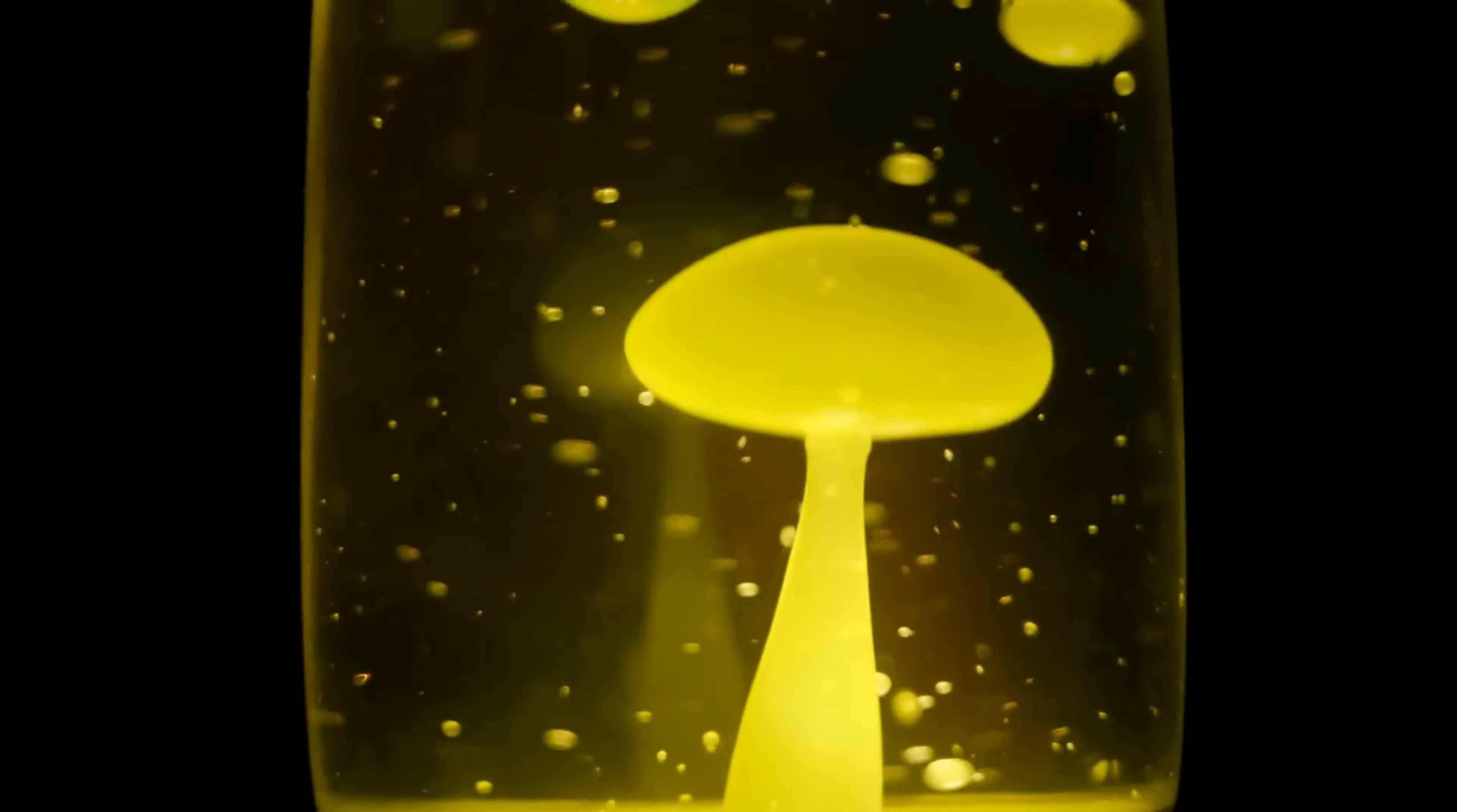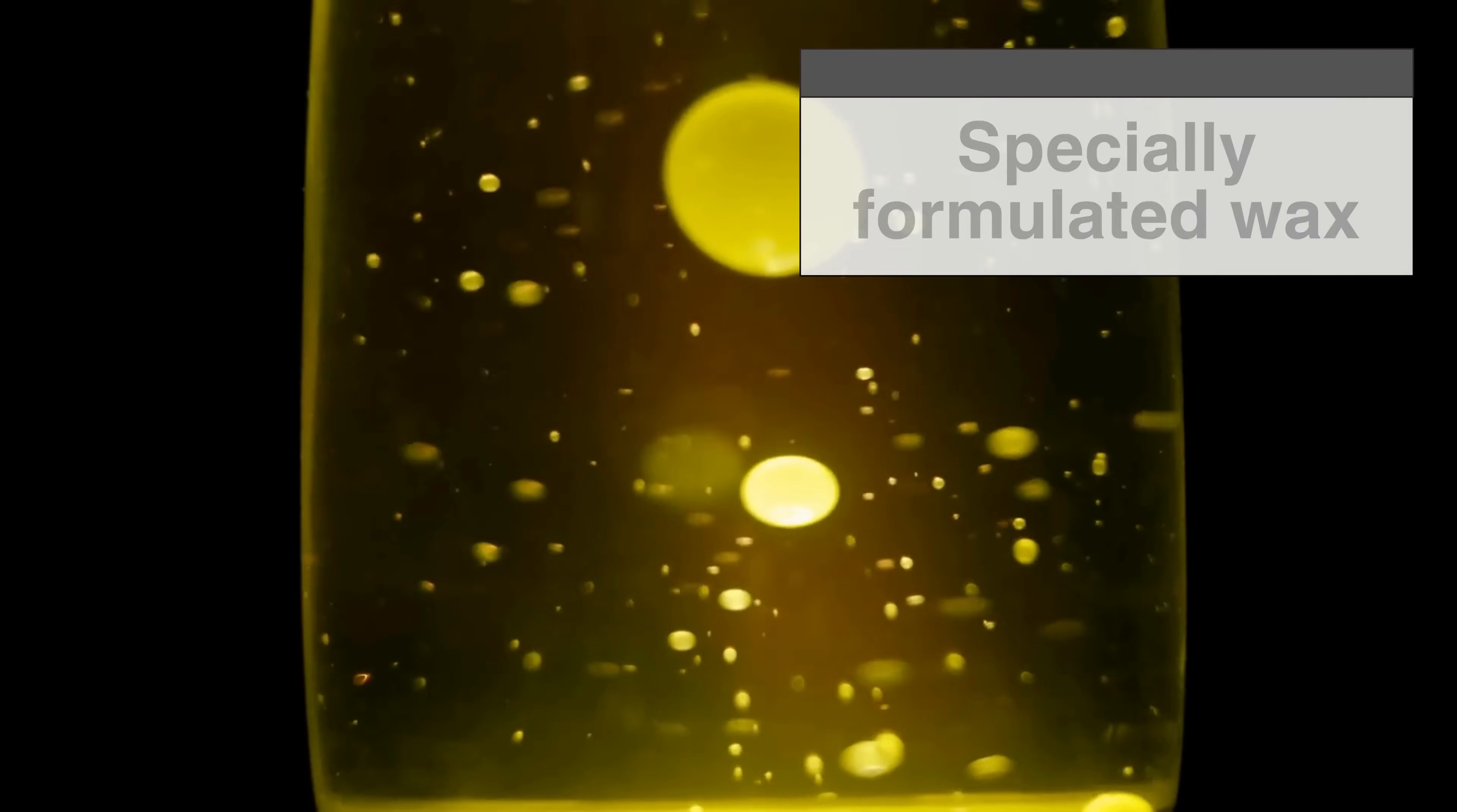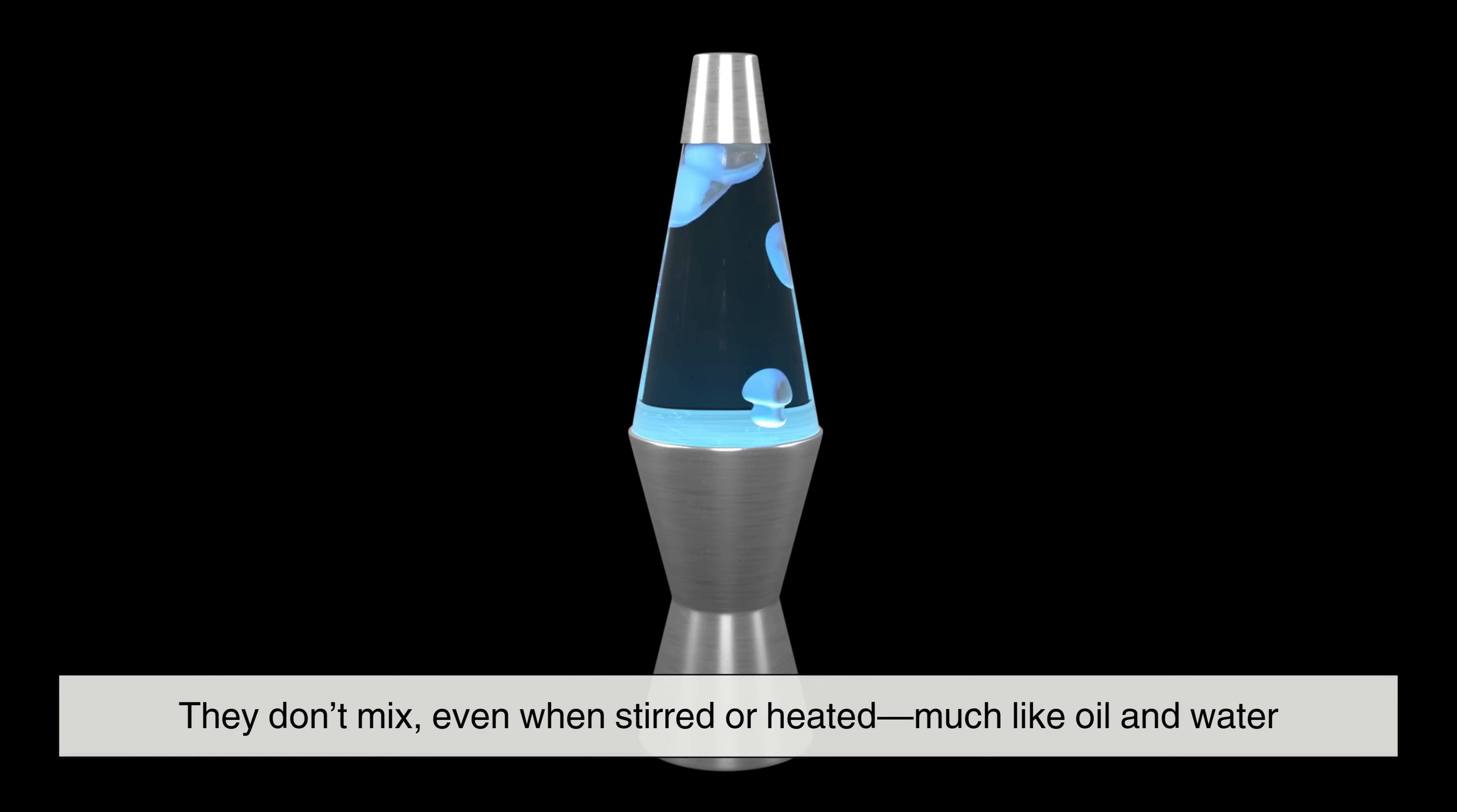At its core, the lava lamp contains two essential components, a specially formulated wax and a surrounding liquid, both sealed inside a transparent container. These substances are immiscible. They don't mix, even when stirred or heated, much like oil and water.